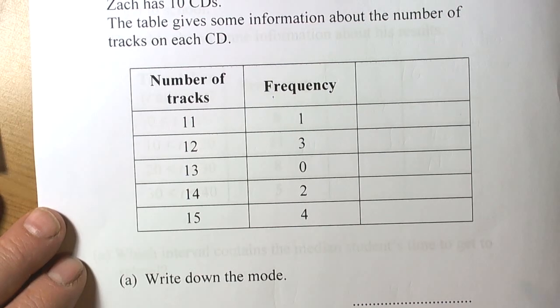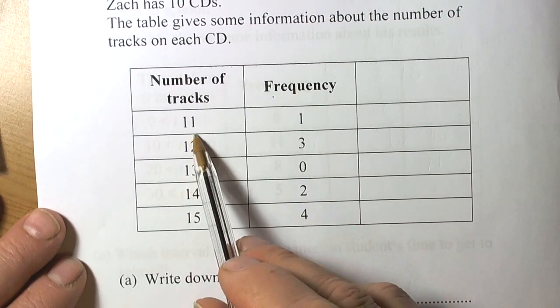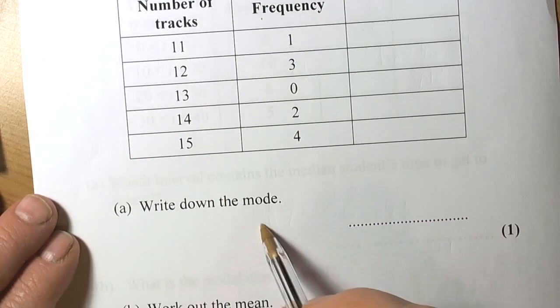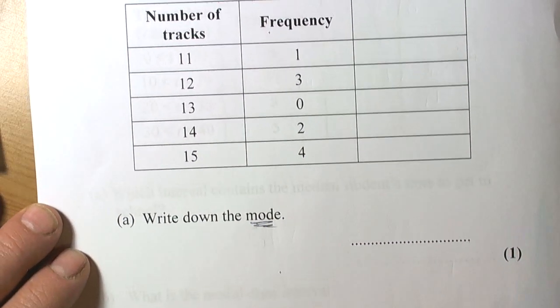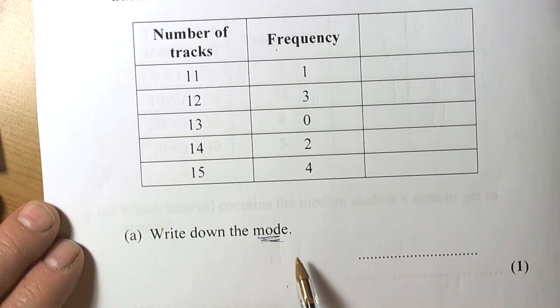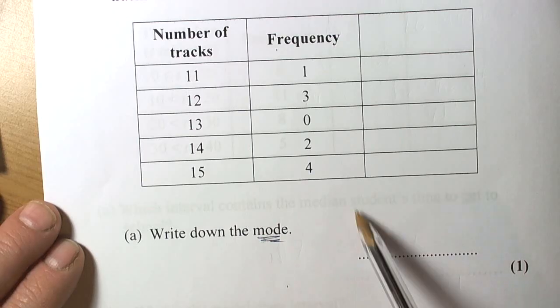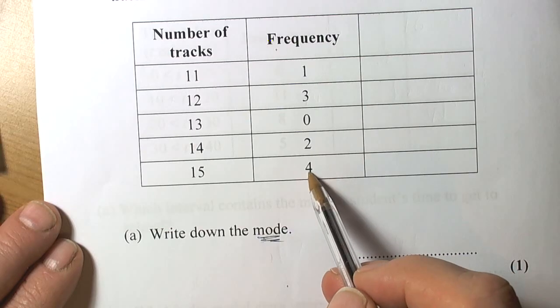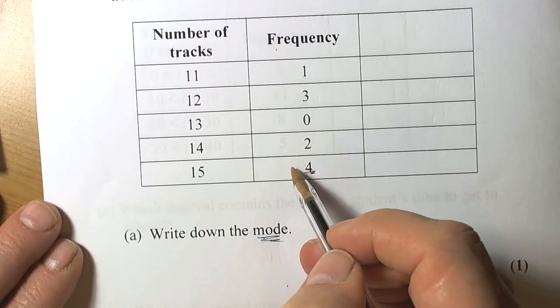To find the mode, remember it's about the item that occurs most often - the highest frequency. Looking through this list, the highest frequency is 4, which tells us the mode average number of tracks is 15.